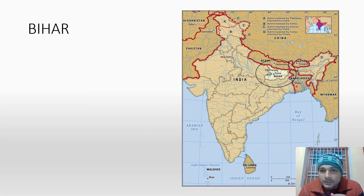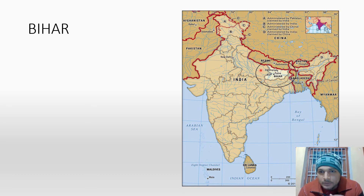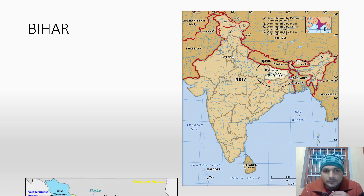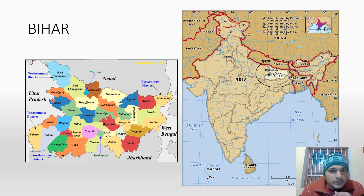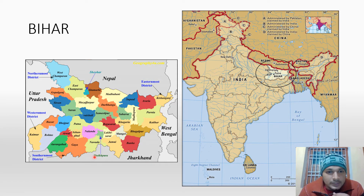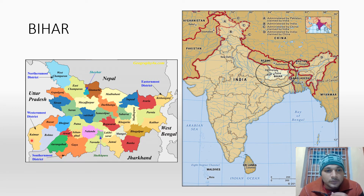Bihar's location — we will see its position in India. One side is Nepal, then here is Uttar Pradesh, here is Jharkhand which was partitioned and is now separate, and here is West Bengal. Bihar's northernmost district is West Champaran, the most eastern district is Kishanganj, the most southern district is in the south, and the westernmost district is Kaimur.